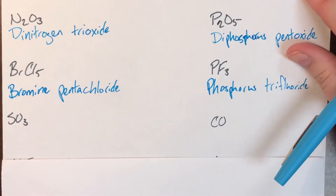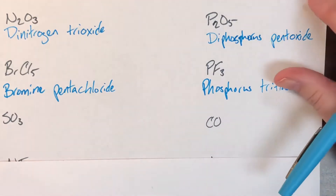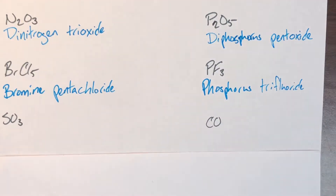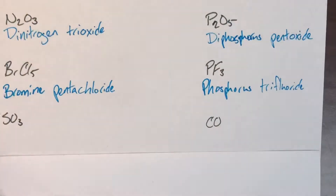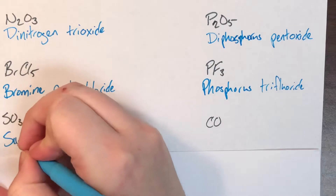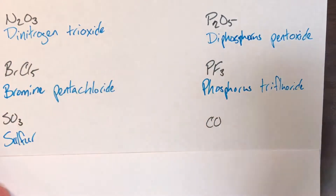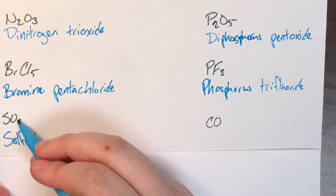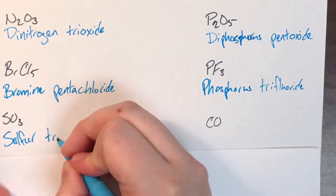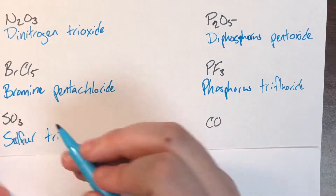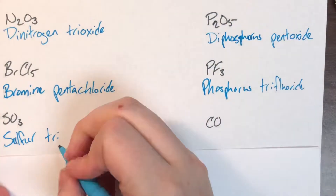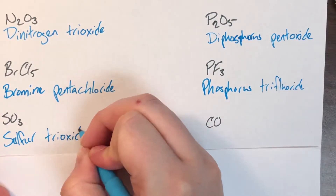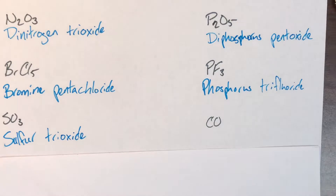Next is SO3. No subscript for S means no prefix — just sulfur. The subscript of 3 gives the prefix tri. O is oxygen, whose compound name is oxide, so trioxide. The full name is sulfur trioxide.